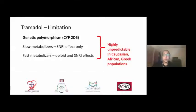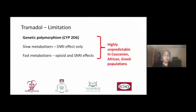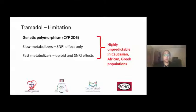Therefore, it becomes highly unpredictable within specific populations, such as Caucasians, Africans, Greeks, and Hungarians. Interestingly enough, within the Indian, South Asian, and Southeast Asian populations, we find that there is less likelihood of genetic polymorphisms, and therefore we can optimize the use of tramadol for opioid as well as SNRI effects.